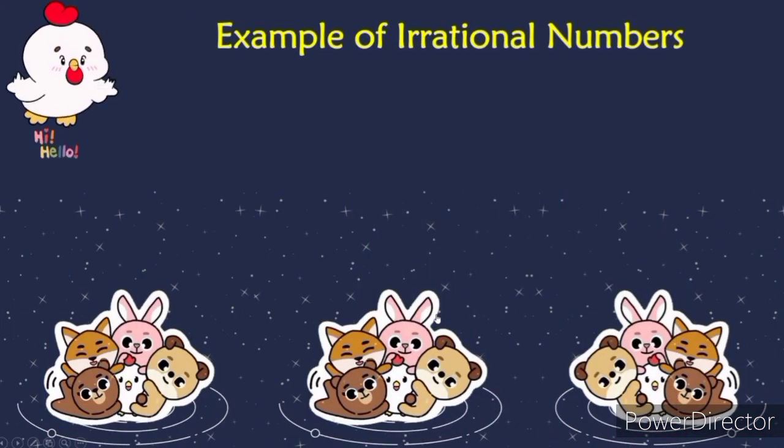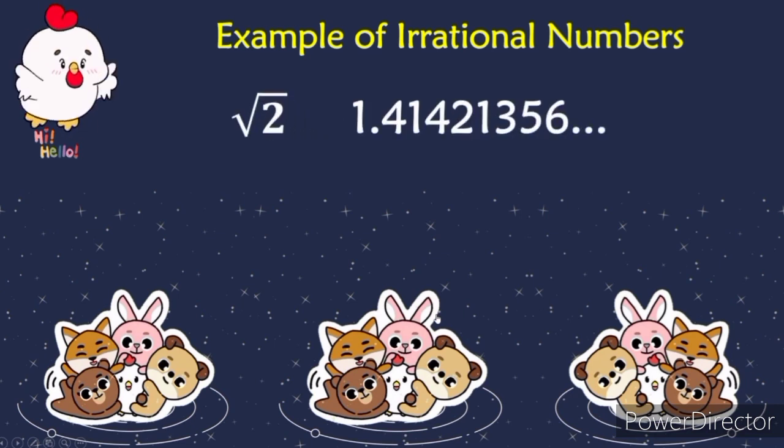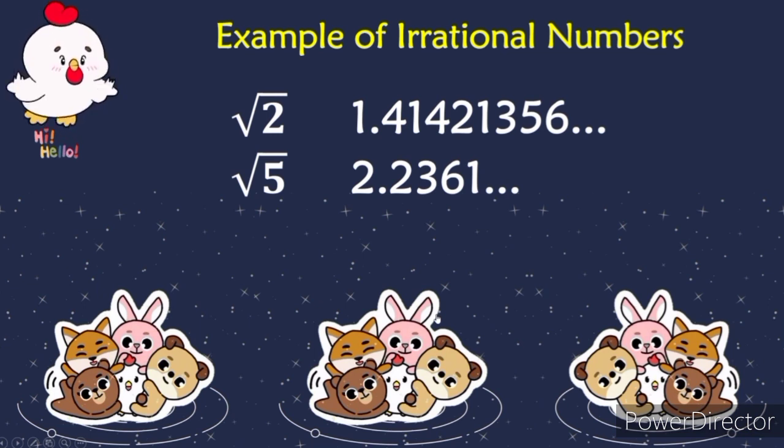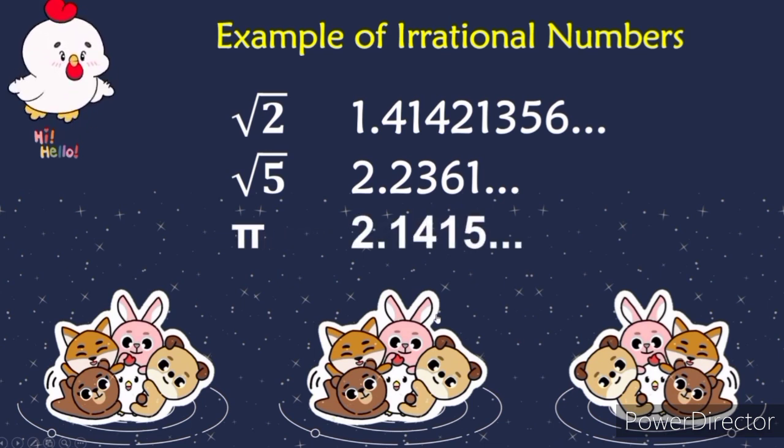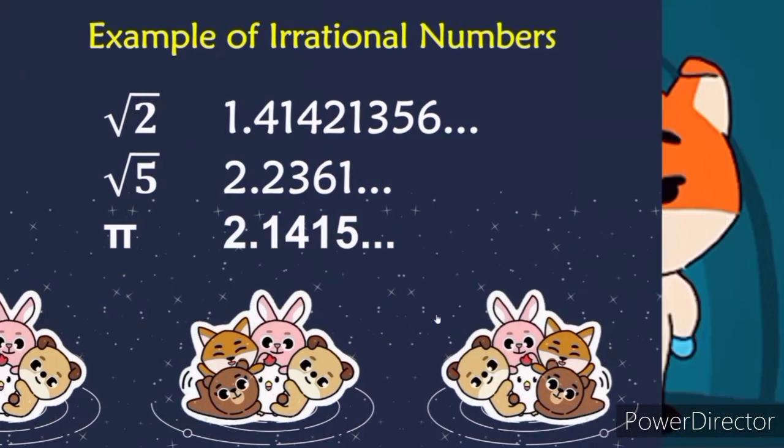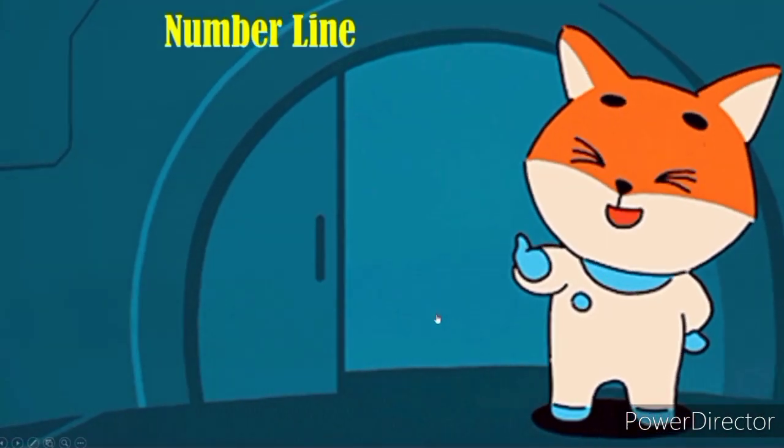Let's have example for irrational numbers. Square root of 2 is equal to 1.4142135 and so on. There is no repeating number. Now we have square root of 5. We have 2.2361 and so on. Again, there is no repeating number. And of course, we have pi. We have 3.1415 and so on. Again, there is no repeating number. These are irrational numbers.